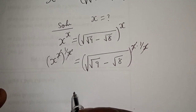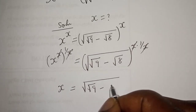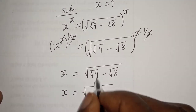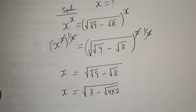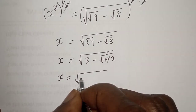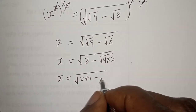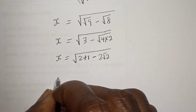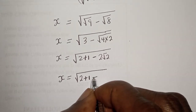So s is equal to the square root of square root of 9 minus square root of 8. Now, square root of 9 is 3, and square root of 8 is square root of 4 multiplied by 2. So s is equal to square root of 3, which can be written as 2 plus 1, minus square root of 4 times 2, which is 2 root 2. This gives us s is equal to square root of (2 plus 1 minus 2 root 2).